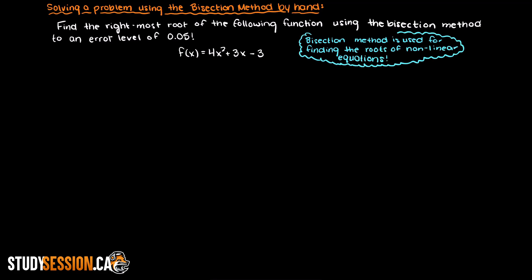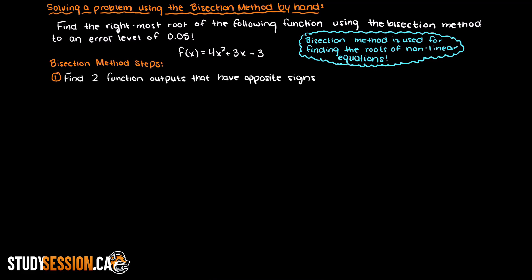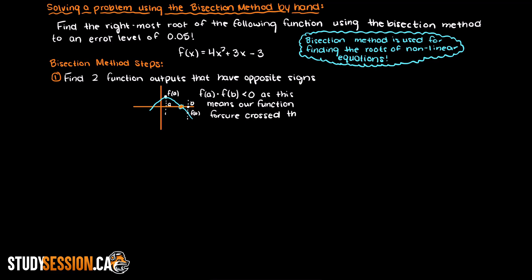Let's write the steps to our bisection method first. First, we must find two function outputs that have opposite signs. This should make sense as opposite sign outputs means that we cross the x-axis and therefore have a root within these two inputs. So f(a) times f(b) must always be less than 0, as otherwise we would have two outputs that are on the same side of the x-axis.